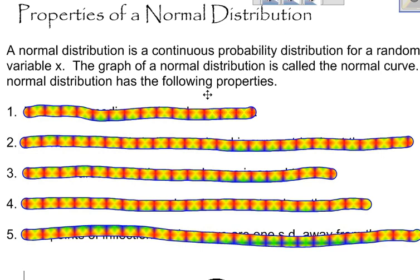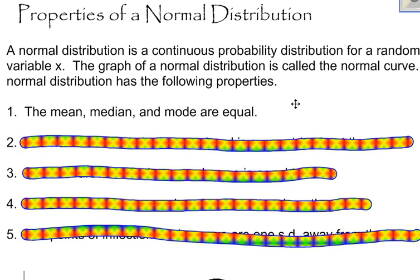I'm going to go through these fairly quickly, but one of the properties is that the mean and the median and the mode are equal. And you should know that if the mean and the median are equal, that your distribution is bell-shaped and symmetric.